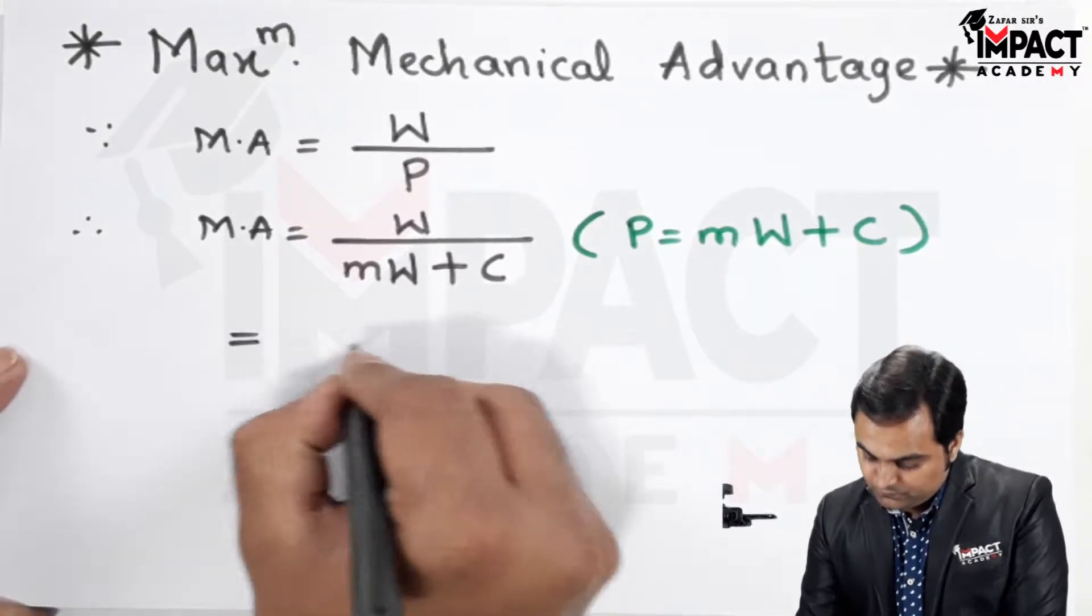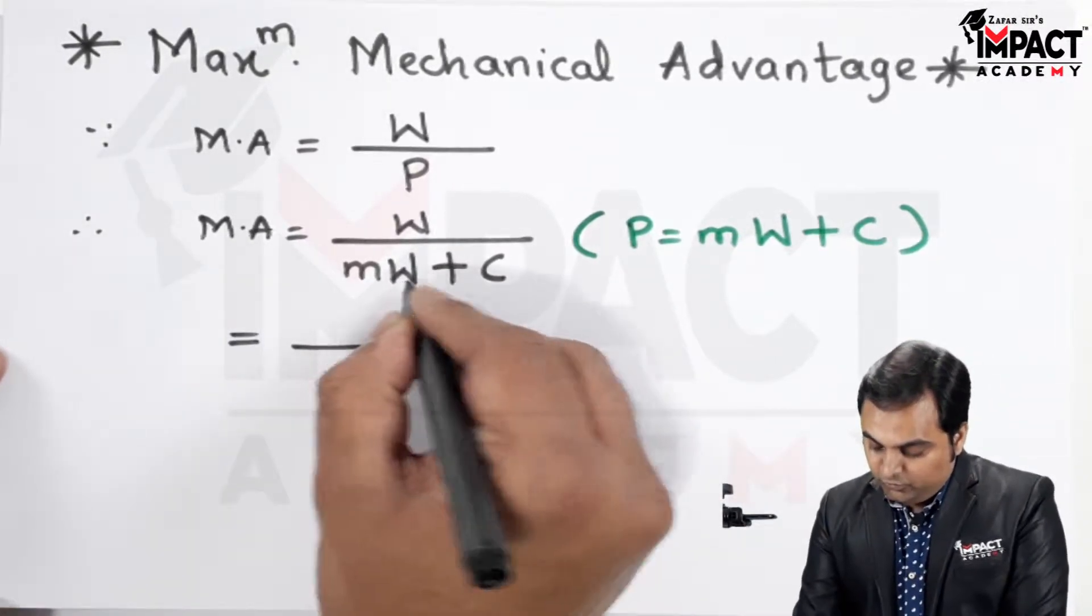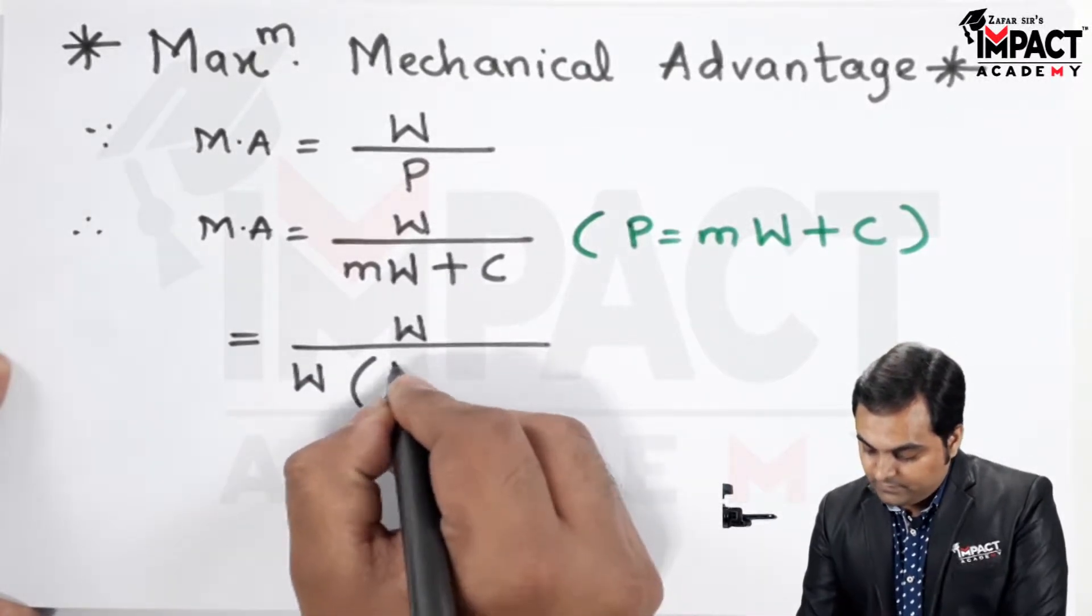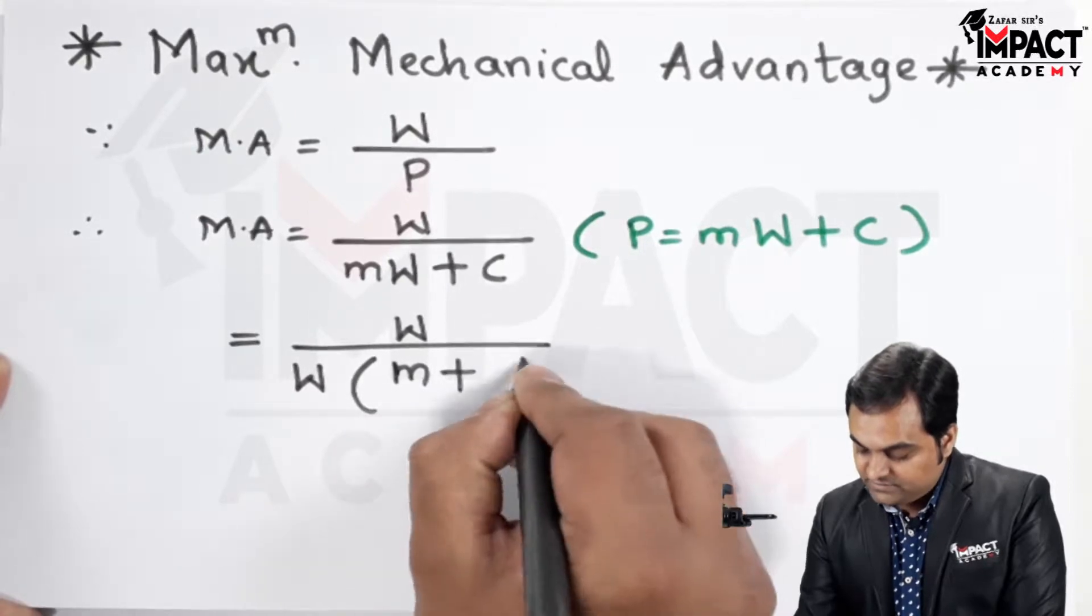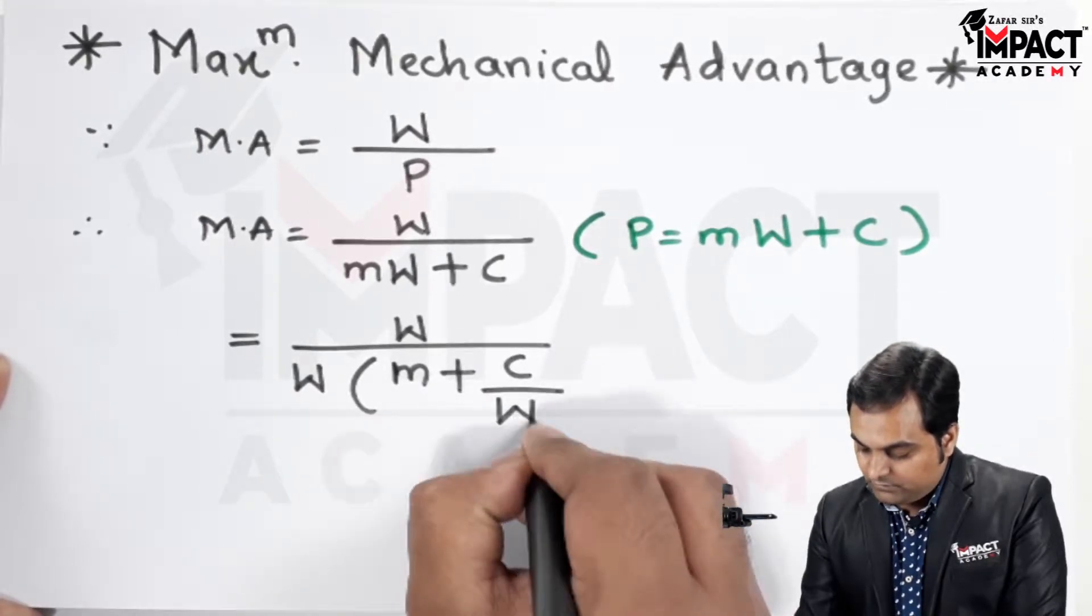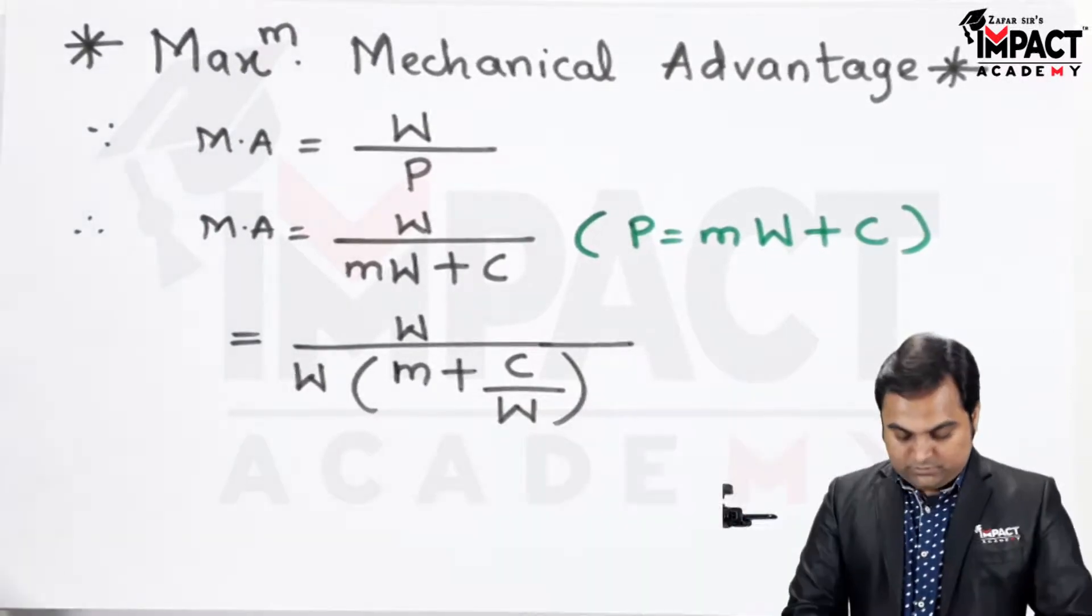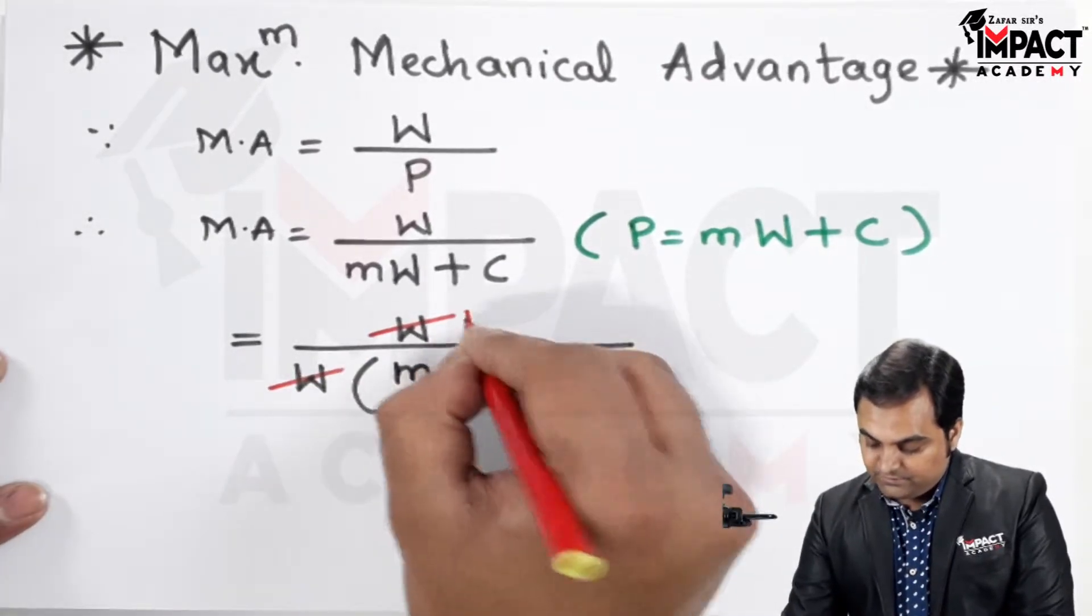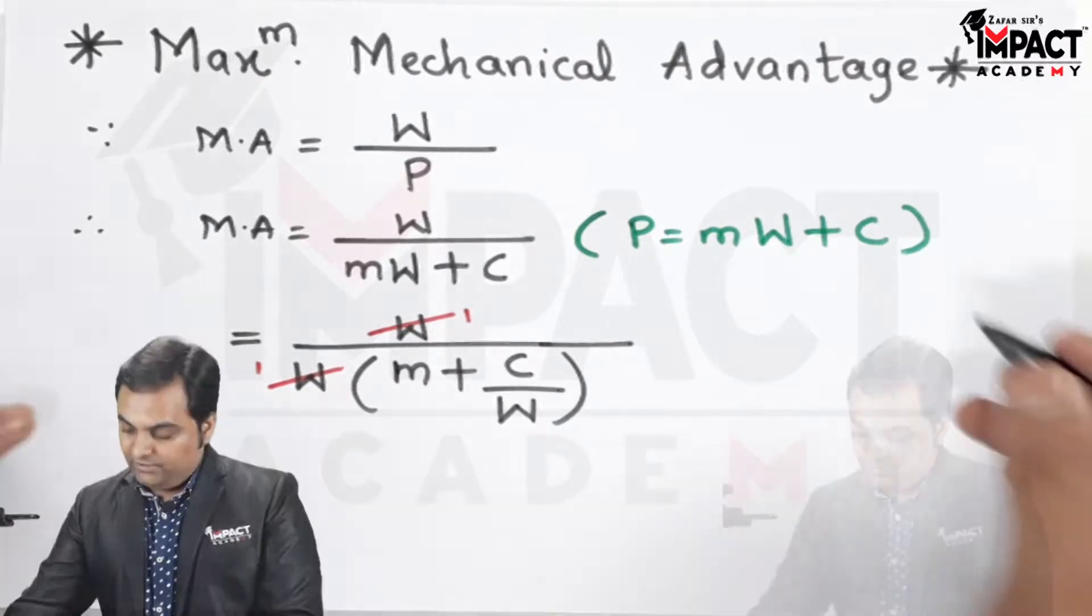Then W would be taken common from the denominator, so we have M plus C upon W. From the numerator and denominator, W gets cancelled.